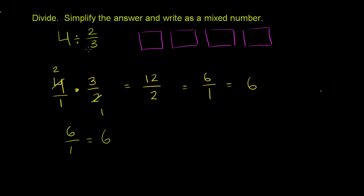And you could view 4 divided by 2 thirds. Let's divide these four boxes into groups of 2 thirds of a box and figure out how many groups do we have. So where are our groups? So let's see.